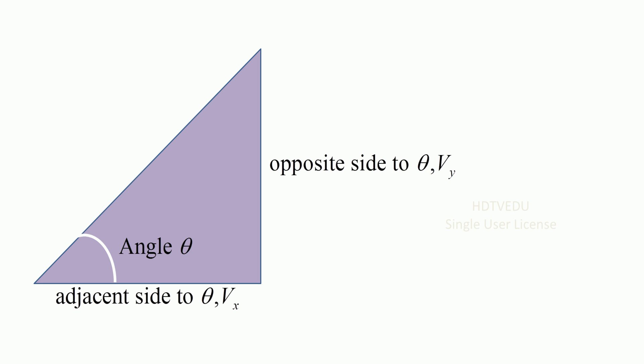All right, so we have a triangle. And then what do we know about the triangle? Here is an angle theta. And then we have the adjacent side to theta and we have the opposite side to theta. For our problem here, we have the opposite side as vy. We have the horizontal side as vx.